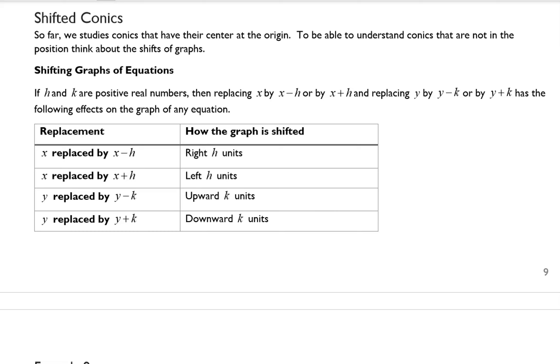So far we've studied conics where their center was at the origin. Now we want to take a look at conics where their center is not at the origin and think about these in terms of shifts either up, down, left, or right. The table below describes how changing h or k will affect the shift that happens for the center of the conic section.